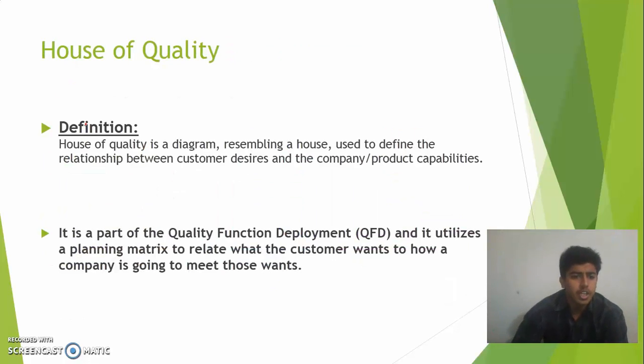So let's talk about House of Quality. House of Quality is a diagram resembling a house used to define the relationship between customer desires and the company product capabilities. So it is kind of a link between these two. Also, it is a part of the quality function deployment and it utilizes a planning matrix to relate what the customer wants to how a company is going to meet those needs.